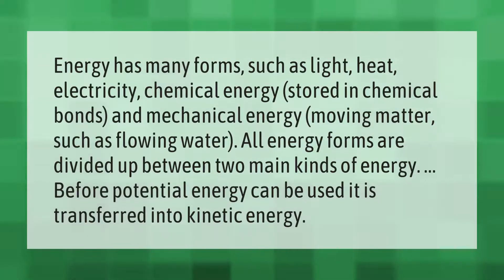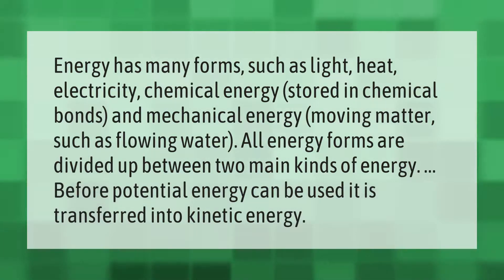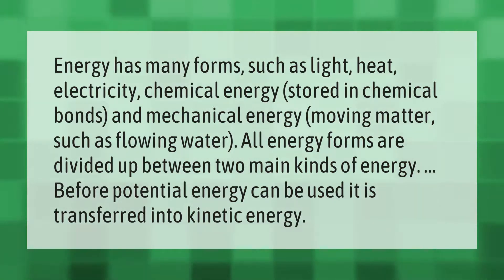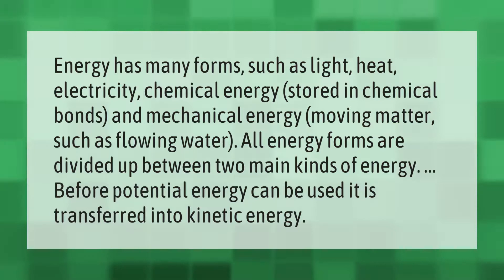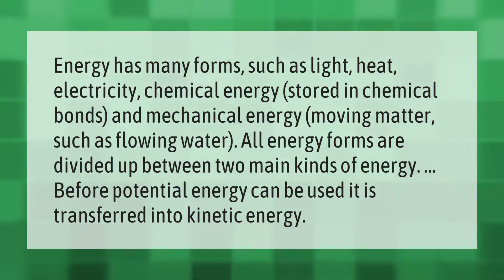Energy has many forms, such as light, heat, electricity, chemical energy stored in chemical bonds, and mechanical energy moving matter such as flowing water. All energy forms are divided between two main kinds of energy. Before potential energy can be used, it is transferred into kinetic energy.